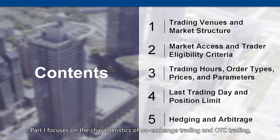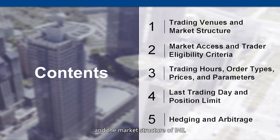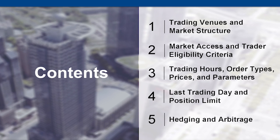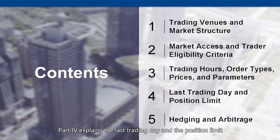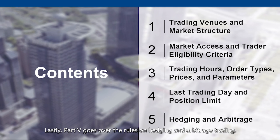Part one focuses on the characteristics of on-exchange trading and OTC trading and the market structure of INE. Part two explains how investors can access the INE market and what eligibility requirements they need to meet. Part three highlights some of the key aspects of trading at INE, including trading hours, available orders, how various prices are formed, and major trading parameters.